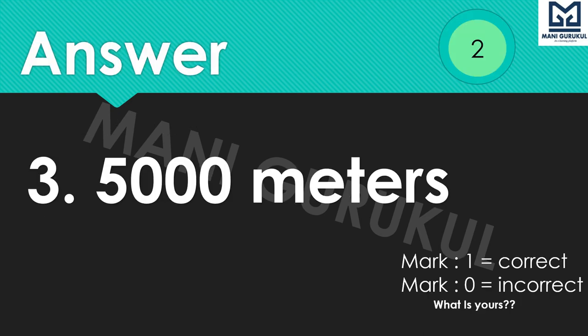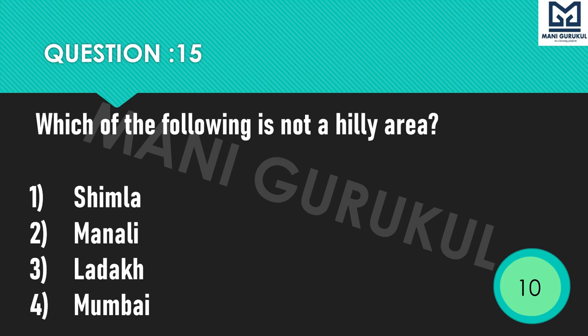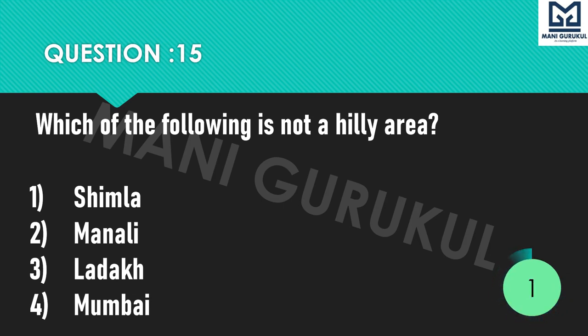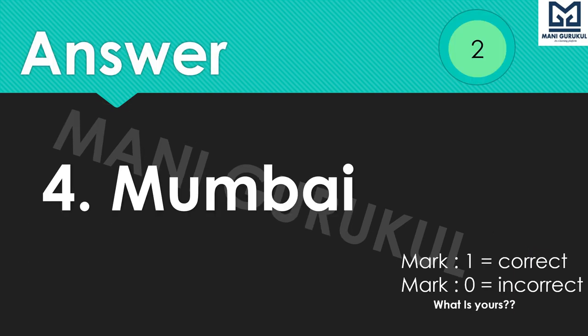Time's up. Answer is 3rd: 5,000 meters. Question 15: Which of the following is NOT a hilly area? Options: 1st Shimla, 2nd Manali, 3rd Ladakh, 4th Mumbai. Time's up. Answer is 4th: Mumbai.